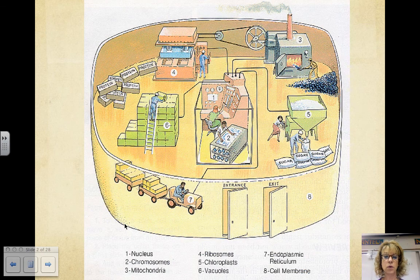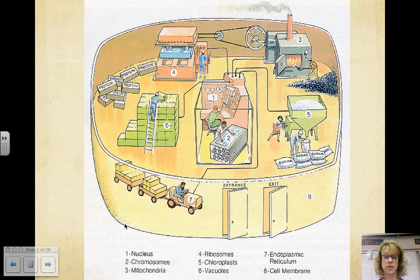The cell can often be compared to a factory. Products are being made and packaged, waste is being produced and eliminated, things go in and things go out. There are bosses who control the place and workers who carry out instructions. In a cell, these types of jobs and tasks are all accomplished by thousands of chemical reactions.